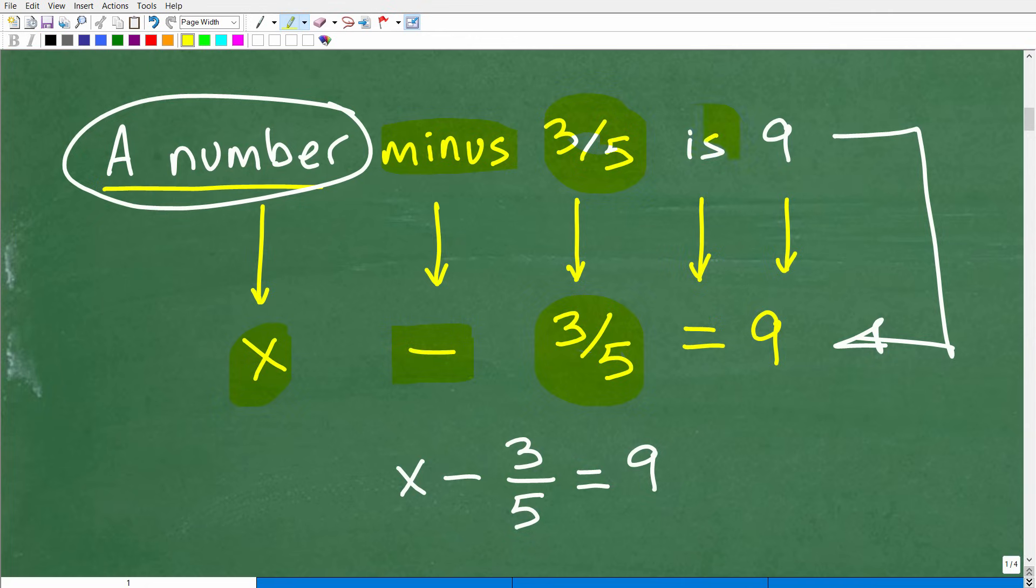Anytime you see the word is, that means equal, or equal to. So a number minus three-fifths is or is equal to. So we'll put the equal sign there. Is equal to what? Nine. Is nine. So we put a nine there.